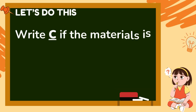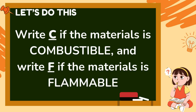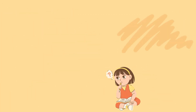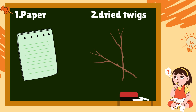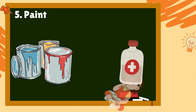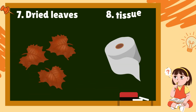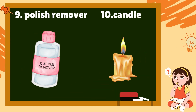Let's do this. Write C if the material is combustible and F if the material is flammable. One, paper; two, dried twigs; three, kerosene; four, cotton shirt; five, paint; six, 70 percent ethyl alcohol; seven, dried leaves; eight, tissue; nine, polish remover; ten, candle.